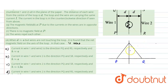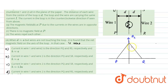Now since the current in the loop is in the counterclockwise direction, this current-carrying loop is placed here. What would be the direction of the magnetic field due to the loop? It would be in the upward direction. Using the right-hand thumb rule we can get that on the axis the magnetic field would be in this direction — this is the magnetic field on the axis due to the loop. Now the net magnetic field has to be zero, so due to wire one and wire two the net magnetic field should be in the downward direction.